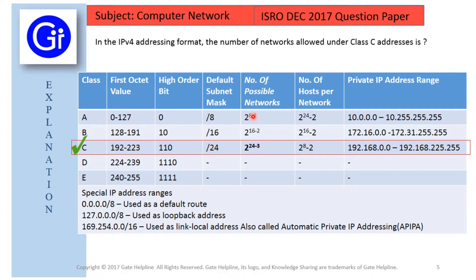The number of possible networks in class C is 2 raised to the power of 24 minus 3. The 24 comes from the default subnet mask, and the 3 comes from the number of higher order bit digits in class C. So the number of possible networks is 2 raised to the power of 24 minus 3.